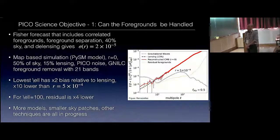So there is hope and there are some indications that with the 21 bands, with the sensitivity, we can remove foregrounds to that level. Of course, more models are required, not just one PySM, looking at smaller sky patches to see if we can improve the residuals here. All of that is in progress.